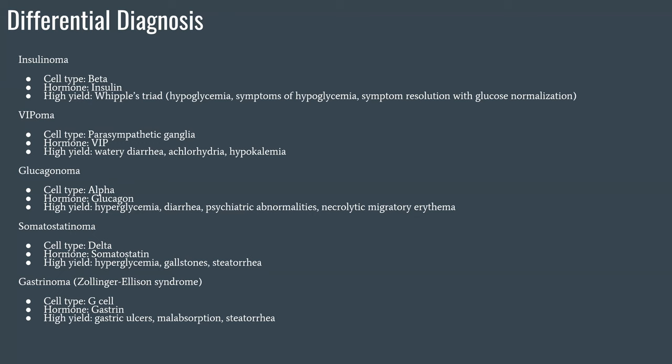Last, we have gastrinoma, commonly called Zollinger-Ellison syndrome — commit that to memory; it's the same thing. The cell type is a G cell and the hormone is gastrin. G stands for gastrin, so that's easy to memorize. The high-yield findings are gastric ulcers — multiple, numerous ulcers. Especially significant is an ulcer distal to the duodenum: 95% of ulcers happen in the duodenum, so if you have one in the jejunum, that is a huge red flag pointing to gastrinoma.